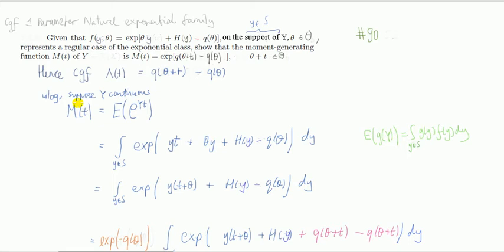Suppose, without loss of generality, that random variable y is continuous. By definition, the MGF, which is what we're after, is this. We integrate to calculate this thing because y is continuous, so it's given by this, using the result of the expectation of some function g of y.